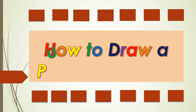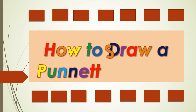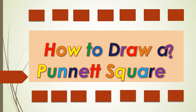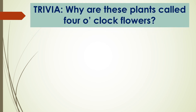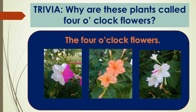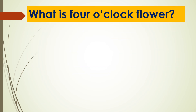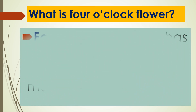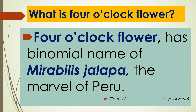How to draw a Punnett square. Trivia: why are these plants called 4 o'clock flowers? The 4 o'clock flower has the binomial name Mirabilis jalapa, the marvel of Peru.